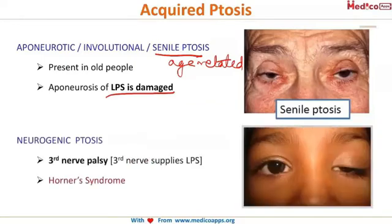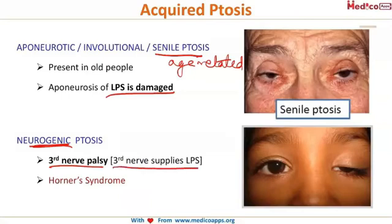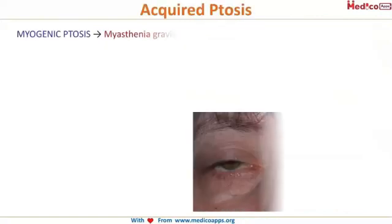The second type is neurogenic ptosis. Neurogenic simply means there is a nerve problem. The most common cause is third nerve palsy, because the third nerve supplies the levator palpebrae. The second most common is Horner's syndrome, which also causes neurogenic ptosis.